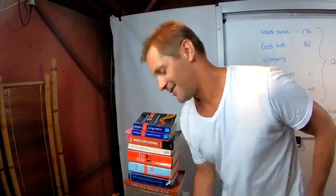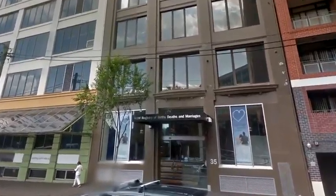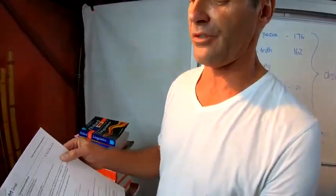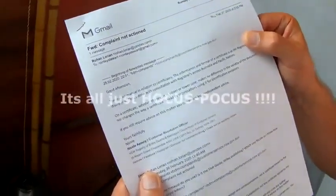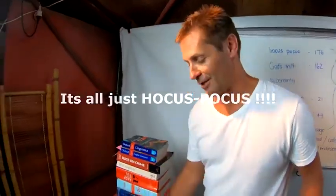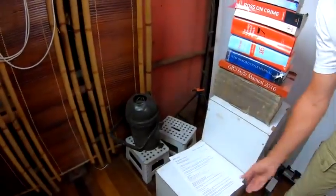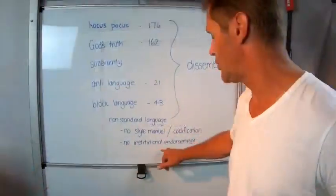This is a little email I received yesterday from Nicole Azuli. Nicole and I go way back - she works at Births Deaths and Marriages in New South Wales. She's a complaints manager there and we have had plenty of back and forth over the years. She finally sent me this email and I'm only going to read you the first sentence: 'Good afternoon, there is no manual in relation to certificates.' There is no manual in relation to the certificates guys. That means no style manual codification, no institutional endorsement. That means your birth certificate cannot be read. You cannot read it. There is no way you can understand that.